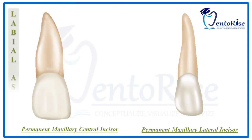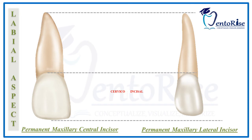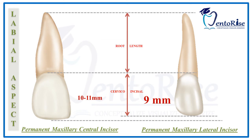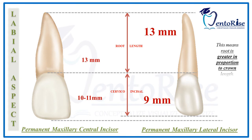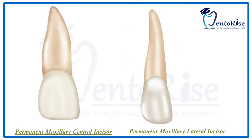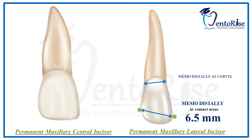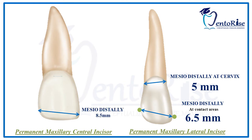Starting with the labial aspect, considering the first heading — dimensions — the cervico-incisal length of a lateral incisor is 9 mm, which is shorter in comparison to the cervico-incisal length of a central incisor, which is roughly equal to 10 to 11 mm. The root length of a lateral incisor is 13 mm, equivalent to that of the central incisor. However, the root is greater in proportion to the crown length in a permanent maxillary lateral incisor. The mesiodistal dimension at the contact areas is 6.5 mm while the dimension at the cervix is 5 mm, which is less than that of the central incisor.